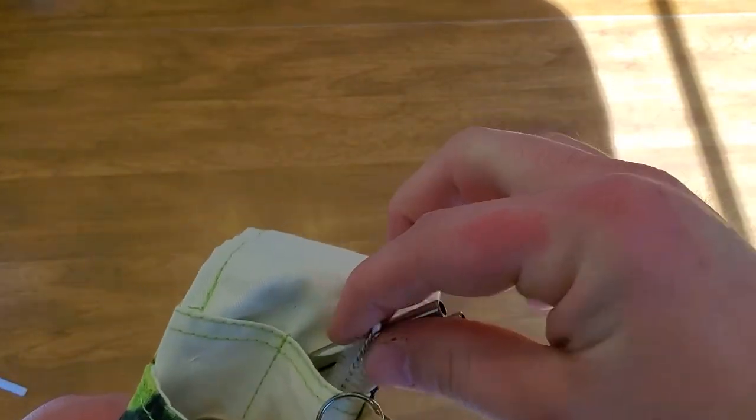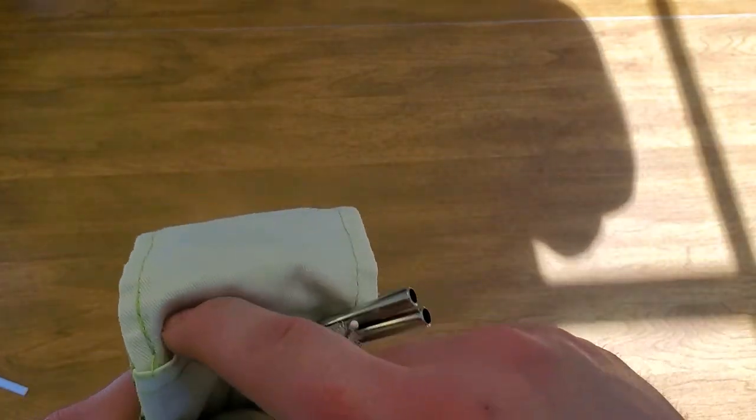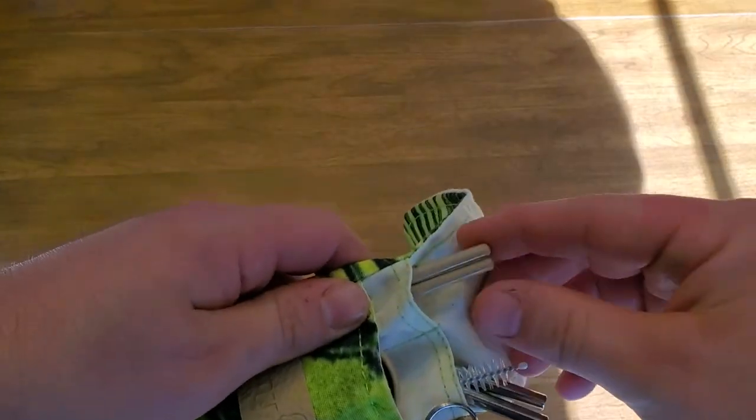Then you have two metal straws, the straw brush. What is on this side? I guess this side, your chopsticks, and then down here is everything else. So I'm going to pour everything out for you.